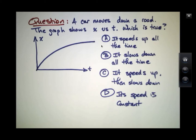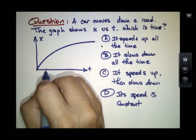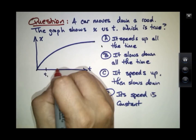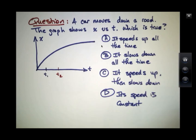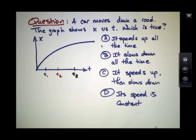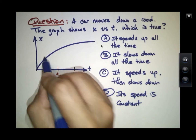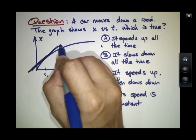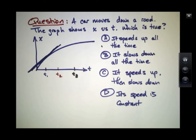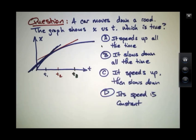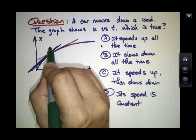So how do we learn about what the velocity is doing? It's easiest if we pick some times on the graph — let's pick 3. The velocity is indicated by the slope of the tangent line at a given point. So at this point on the graph, I could draw a tangent line; that slope is the velocity at that point. I could do the same at a second point, and again at a third point.